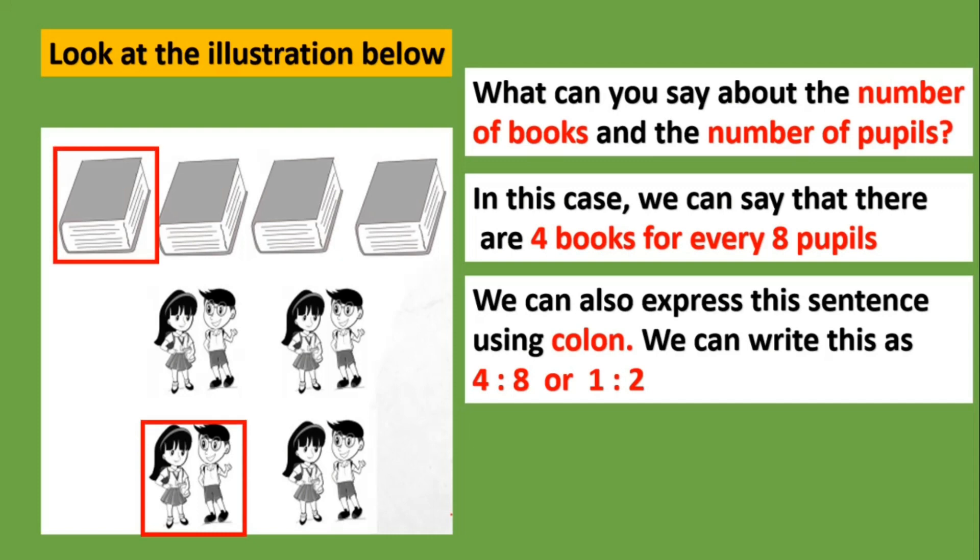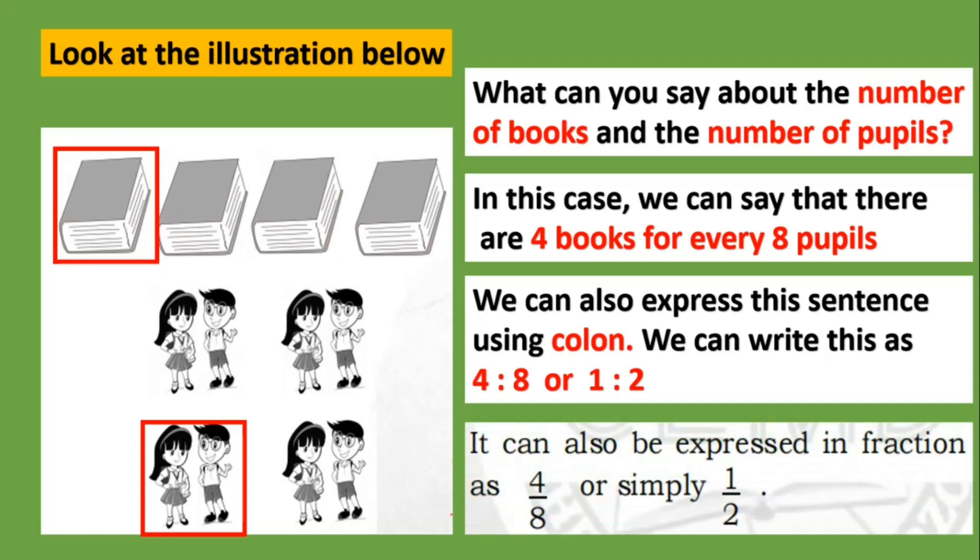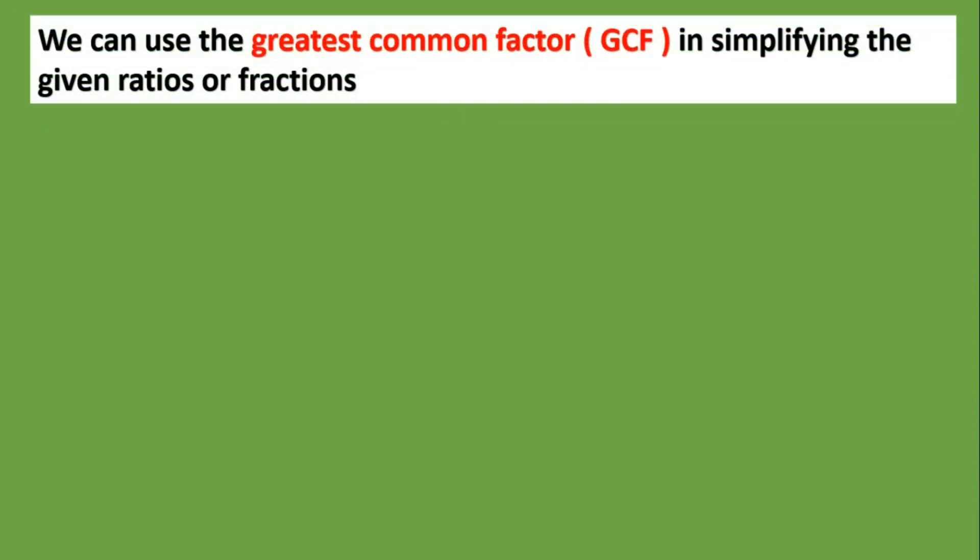So for every one book, there are two pupils. It can also be expressed in fraction as four over eight or simply one half. We can use the greatest common factor or GCF in simplifying the given ratios or fractions.